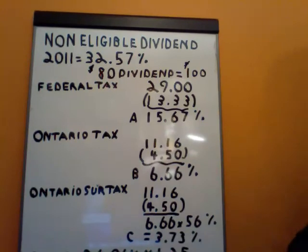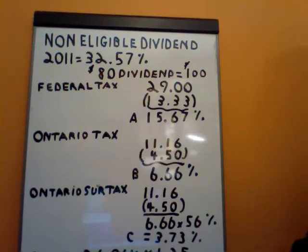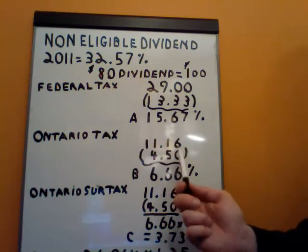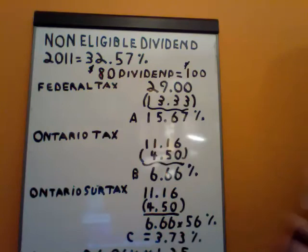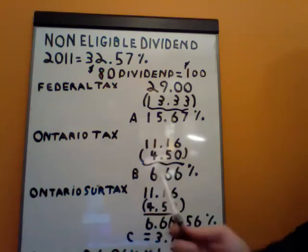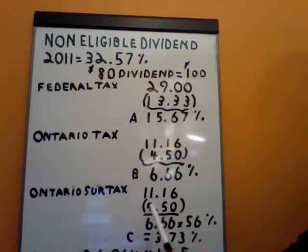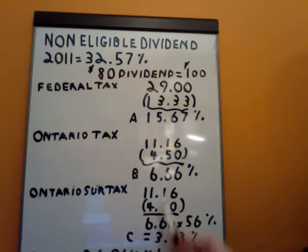Then we calculate our Ontario tax. The top marginal tax rate for Ontario purposes is 11.16%. We deduct from that the 4.5% Ontario Dividend Provincial Tax Credit, giving us 6.66%. Now C — that is the Ontario surtax amount. We pay Ontario surtax on top of our Ontario tax. How we calculate that is our top marginal rate 11.16%, less 4.5% for the Ontario Dividend Tax Credit, giving us 6.66% — the same number as before — but we multiply it by 56%, equaling 3.73%.